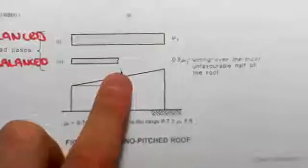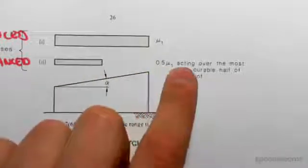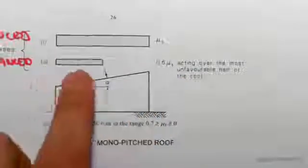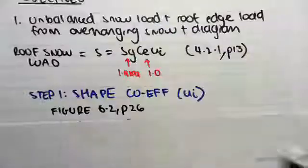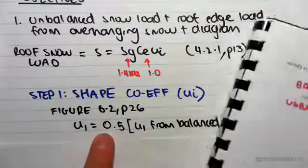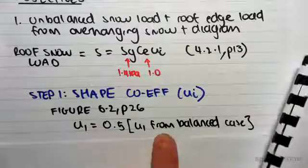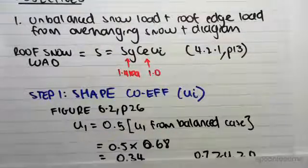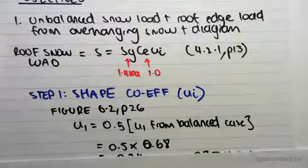Now you can see that it says for the unbalanced case it's 0.5 mu i acting over the most unfavorable half of the roof, which is that half over there. So all we do is literally go: mu i, mu one for this case for the unbalanced, is 0.5 mu one from the balanced case. So it's going to be 0.5, and mu one from the balanced case...